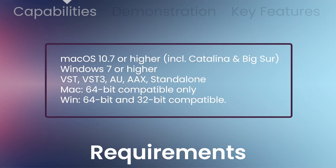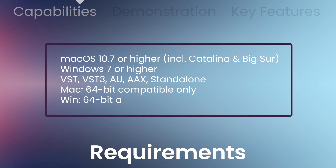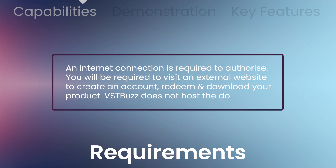Works in macOS 10.7 or higher, including Catalina and Big Sur, or Windows 7 and higher. Plug-in formats: VST, VST3, AU, AAX, and standalone. An internet connection is required to authorize. You will be required to visit an external website to create an account, redeem and download. We do not host the download at VST Buzz.